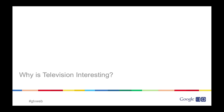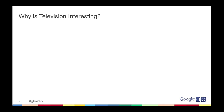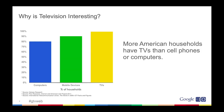Before we really get going, I want to cover why television is even interesting - why we should care about television. It's kind of old media. Probably a lot of you in this room may not even have a TV. But the interesting fact is that TV is actually really, really popular. More American households have TVs than cell phones or computers. About 80% of American households have computers, about 90% have cell phones, and 99% of American households have at least one TV. In fact, more than half of those households have three or more TVs. That's a whole lot of surface area and screens for applications to be on.